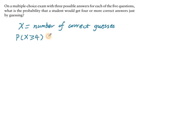And in this example, since X can only be zero, one, two, three, four, or five, X greater than or equal to four corresponds to the case of X equals four and X equals five.